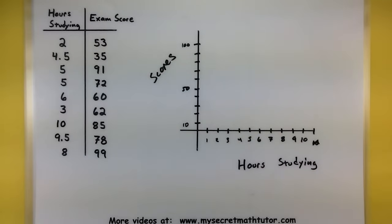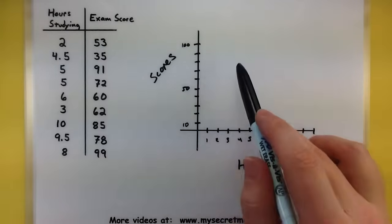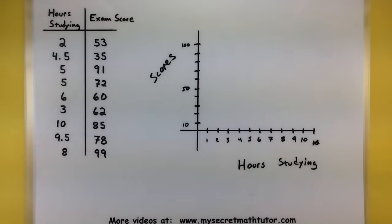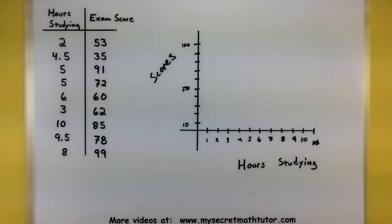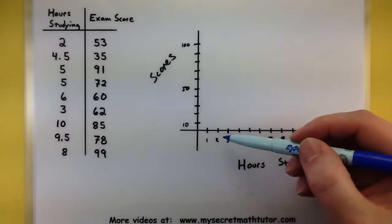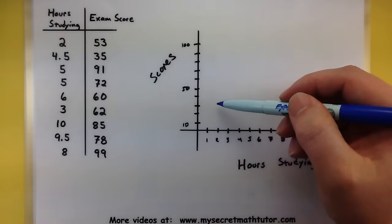Okay, looks good. Now the way this works is we want to put a data point at the intersection of hours and scores so that that one point represents a pair of data. Let's start off for the first one. So we want to put 2 hours of studying and a score of 53. So we'll first find the hours of studying. There's our 2. And we'll put a dot where it intersects 53.